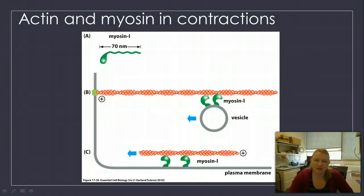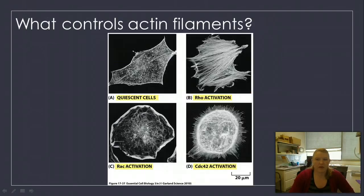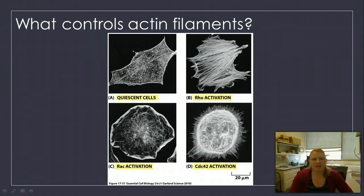You can see here how there's this interaction between myosin and actin to form these contractions. What controls the actin filaments — how we decide what their shapes are — is all through intracellular signaling.